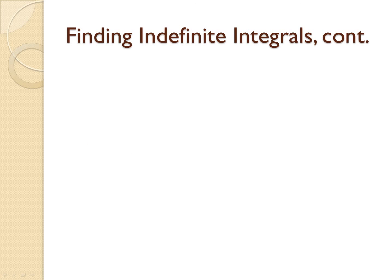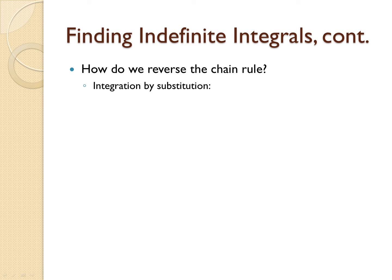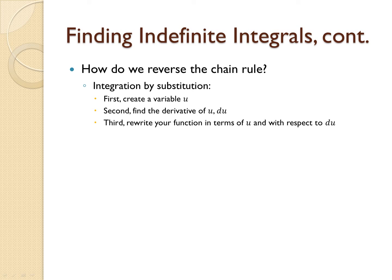You're probably wondering: how do I reverse the chain rule? In order to reverse the chain rule, we will use integration by substitution. The first step involves creating a variable u by choosing a portion of the function that we are finding the integral of. The second step involves finding the derivative of u and ensuring that this will allow us to rewrite our integral in terms of u. Third, we will rewrite the integral in terms of u, and thus it should also be written with respect to du. Finally, we will find the integral in terms of u.